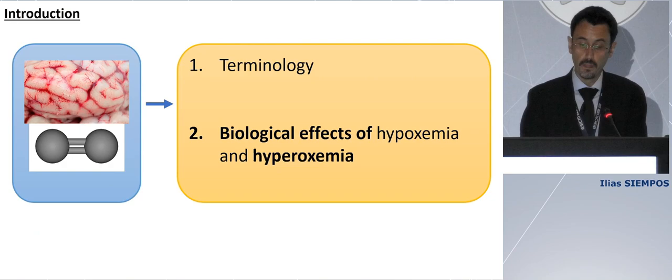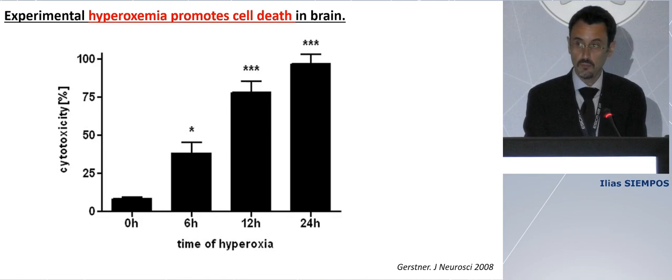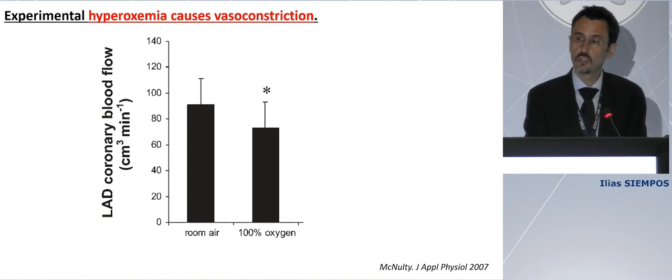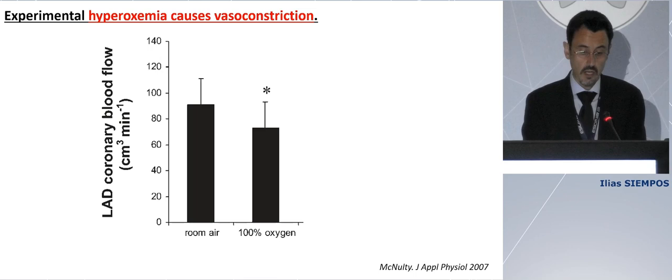Apart from hypoxemia, even hyperoxemia has detrimental biological effects. An experimental study shows that hyperoxemia damages endothelial cells via formation of reactive oxygen species. Hyperoxemia promotes cell death in the brain. And experimental hyperoxemia causes vasoconstriction. To be accurate, I should have said hyperoxia — because the investigators provided 100% oxygen — but hyperoxia causes hyperoxemia, so I think we can extrapolate their findings. This shows the effect of oxygen on coronary blood flow, and I think the same can happen in brain vessels.